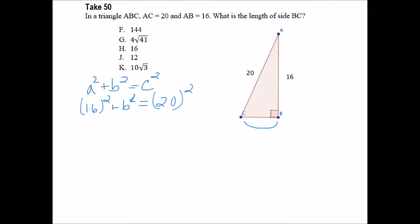Now, using your calculator, you will find that 16 squared is 256 plus B squared equals 20 squared, which is 400.